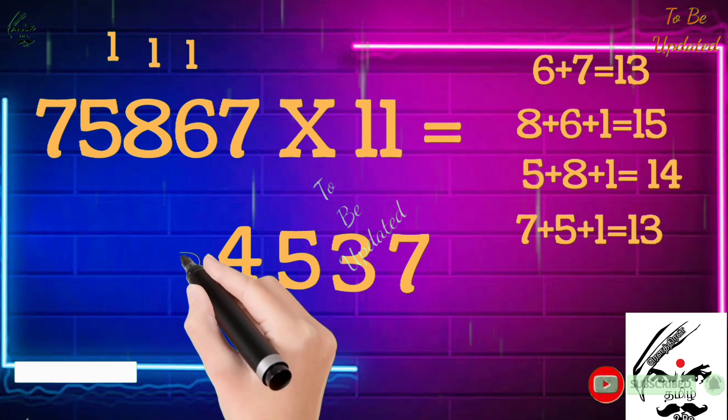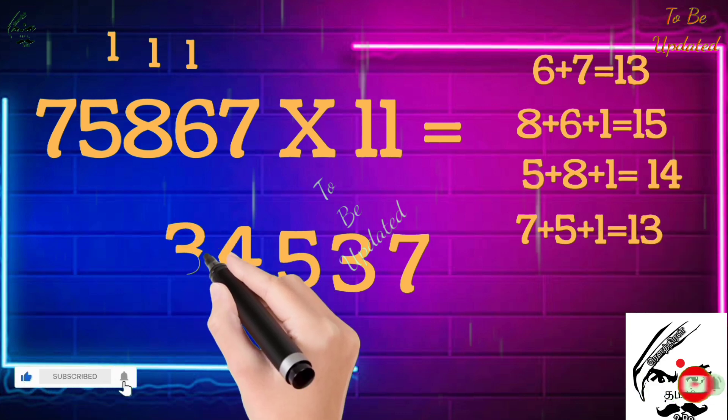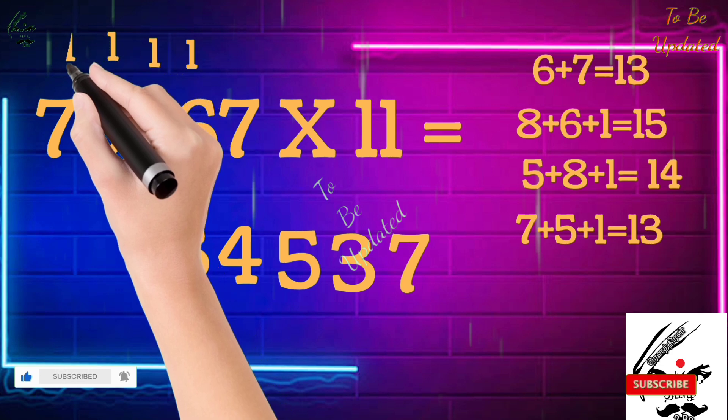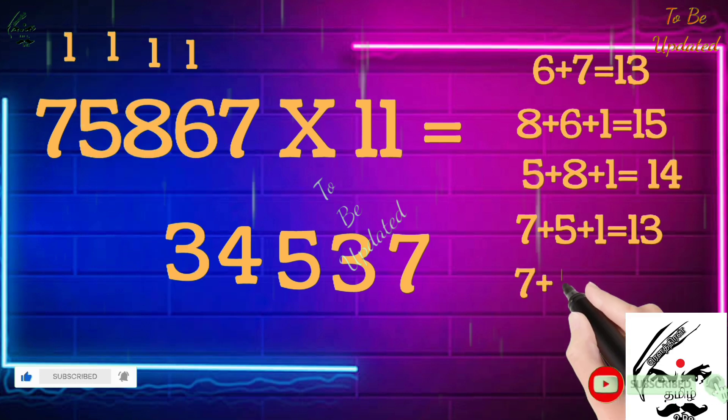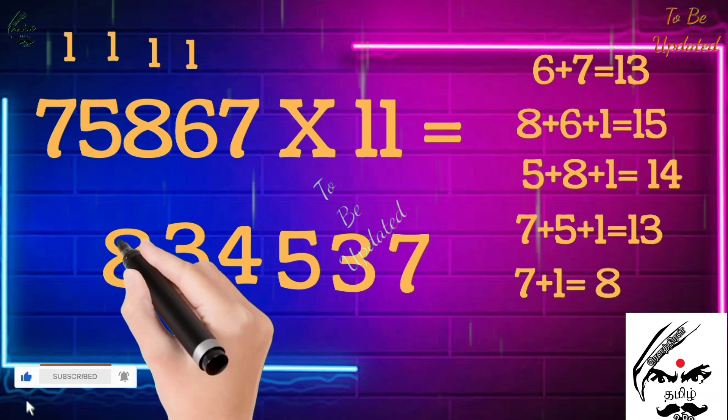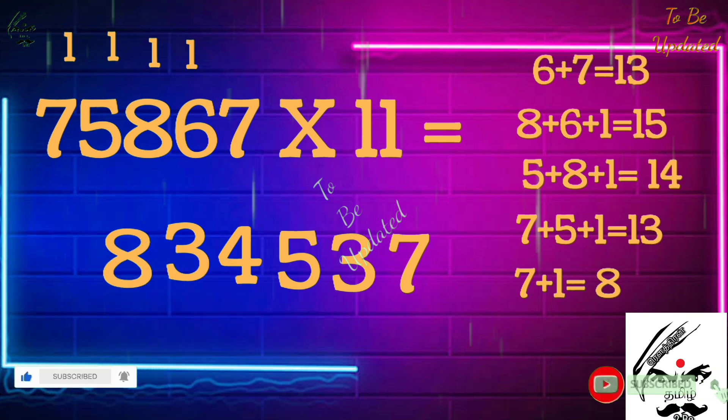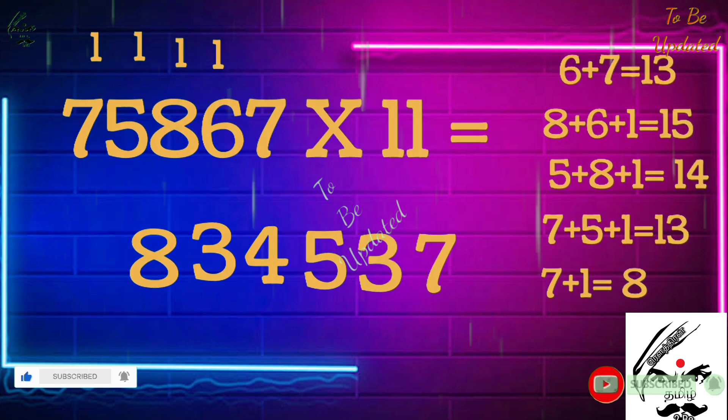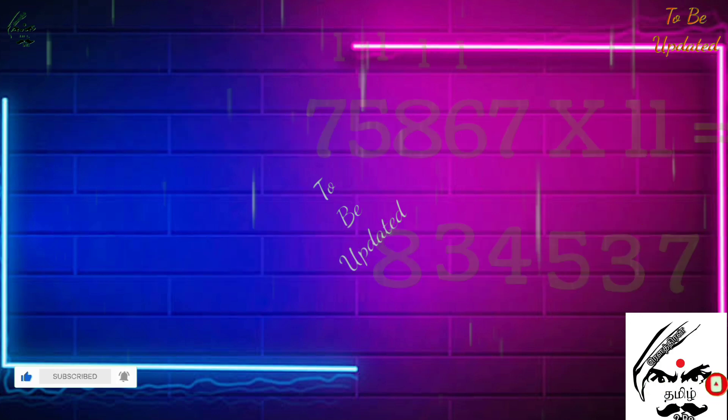Now 1 plus 7 is equal to 8. We write the answer 8. 75,867 times 11 is 8 crores, that is 834,537. That's all.